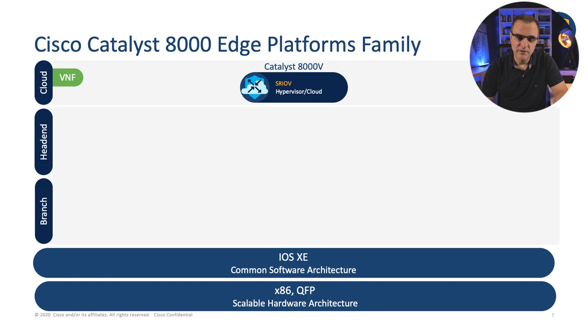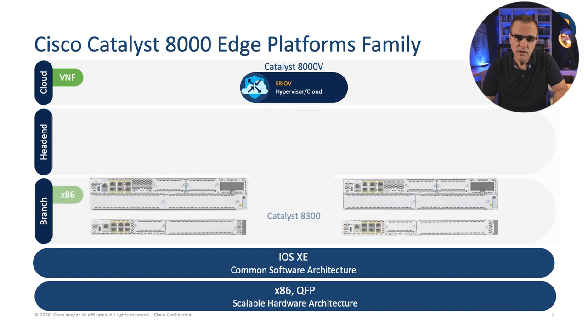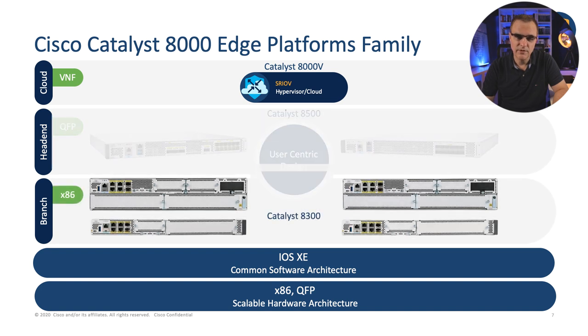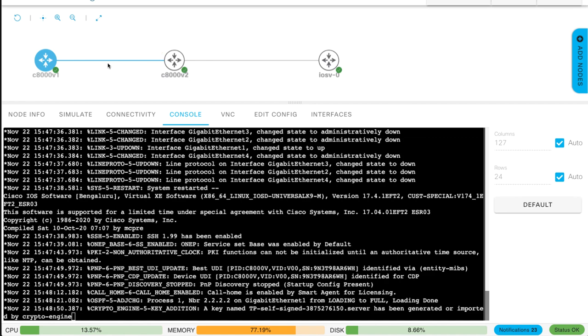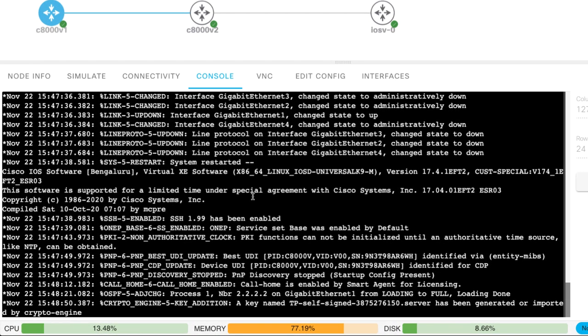There are three types of devices: the 8000V virtual software that you could run in the cloud or on ESXi or other hypervisors, the 8300 edge devices, and the 8500 aggregation devices. What I want to show you is the 8000V running within CML. In this example, I've got two 8000Vs and an IOS V running within CML.